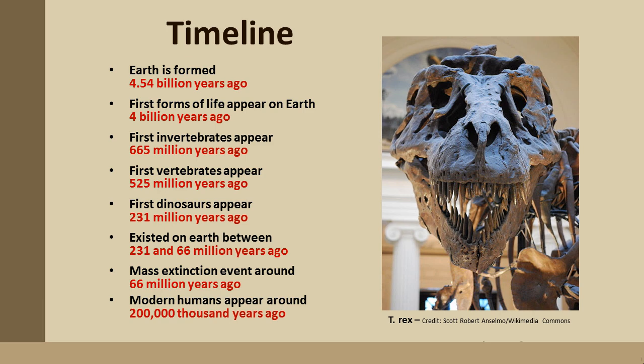Fast forward 3.5 billion years later, and you get to the time where the first invertebrates appear. For 3.5 billion years, there's not much in the oceans — if you were able to travel back during this time period, you wouldn't see a whole lot, because the oceans were dominated by microscopic life forms. About 665 million years ago, the first invertebrates appear. Invertebrates are insects, worms, clams, crabs, and snails — the common characteristic being that they do not possess a backbone.